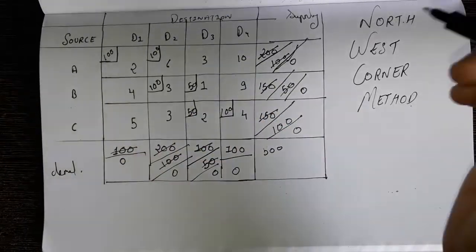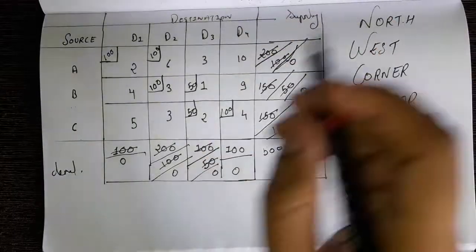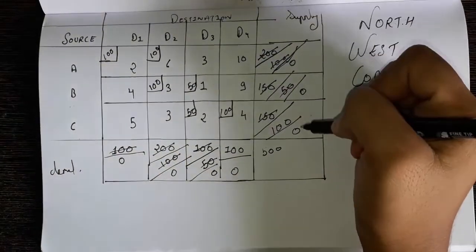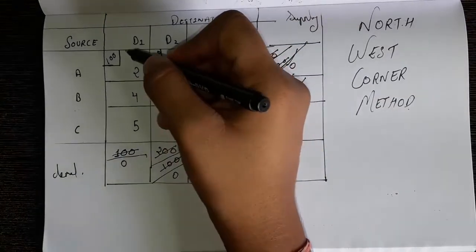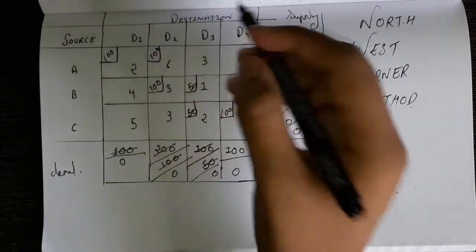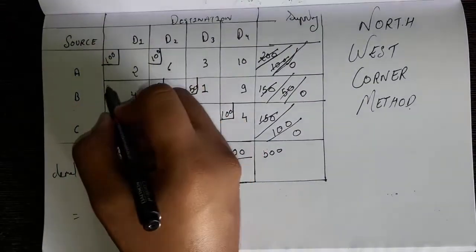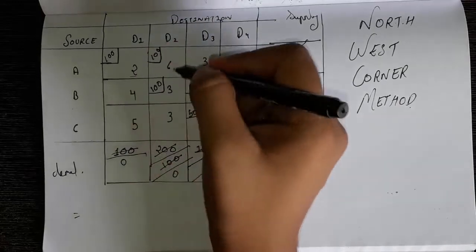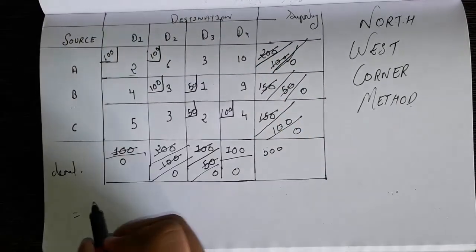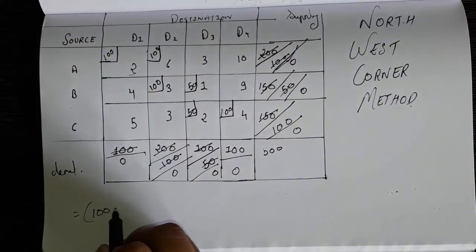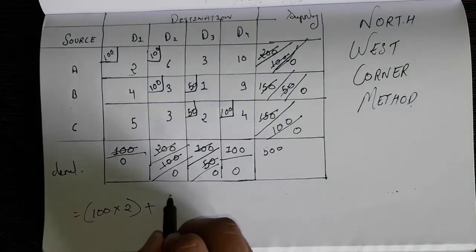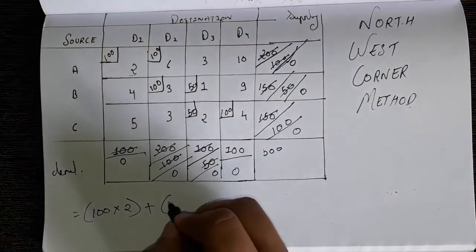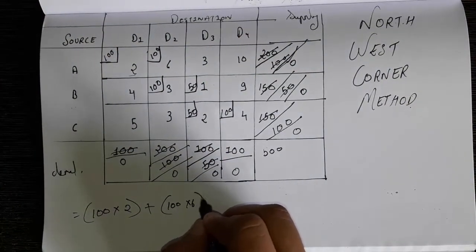So this is how you solve the North West Corner Method. Now to find the total cost: this is supply 1, supply 2, supply 3, and demand 1, demand 2, demand 3. In whichever corner we used to find the actual answer, we have to add all those values. In the first box we have 100 and the cost is 2, so write 100 multiplied by 2, then add. The next is 100 multiplied by 6, and so on.